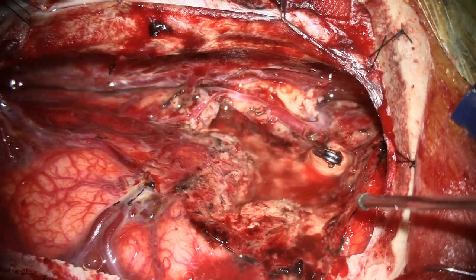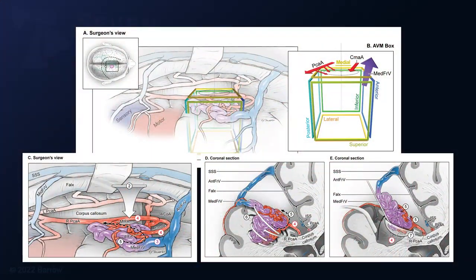Here is an overview of the surgical corridor. These illustrations show the surgeon's view for the medial frontal AVM. The cube defines the feeding arteries and draining veins, which are primarily from callosomarginal and pericallosal arteries. The dissection steps are shown in the lower illustrations, depicting the AVM in the dependent position so that it must be dissected and mobilized upwards out of the medial frontal lobe.